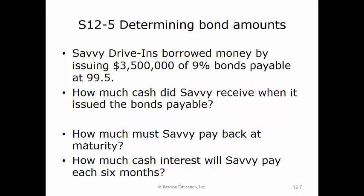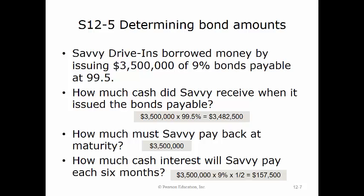Savvy Drive-ins borrowed money by issuing $3,500,000 of 9% bonds payable at 99.5. They received $3,482,500, equal to $3,500,000 times 99.5%. At maturity, they would still pay back the full $3,500,000. Every six months, they would pay $157,500 in cash interest, equal to $3,500,000 times 9% times one-half.